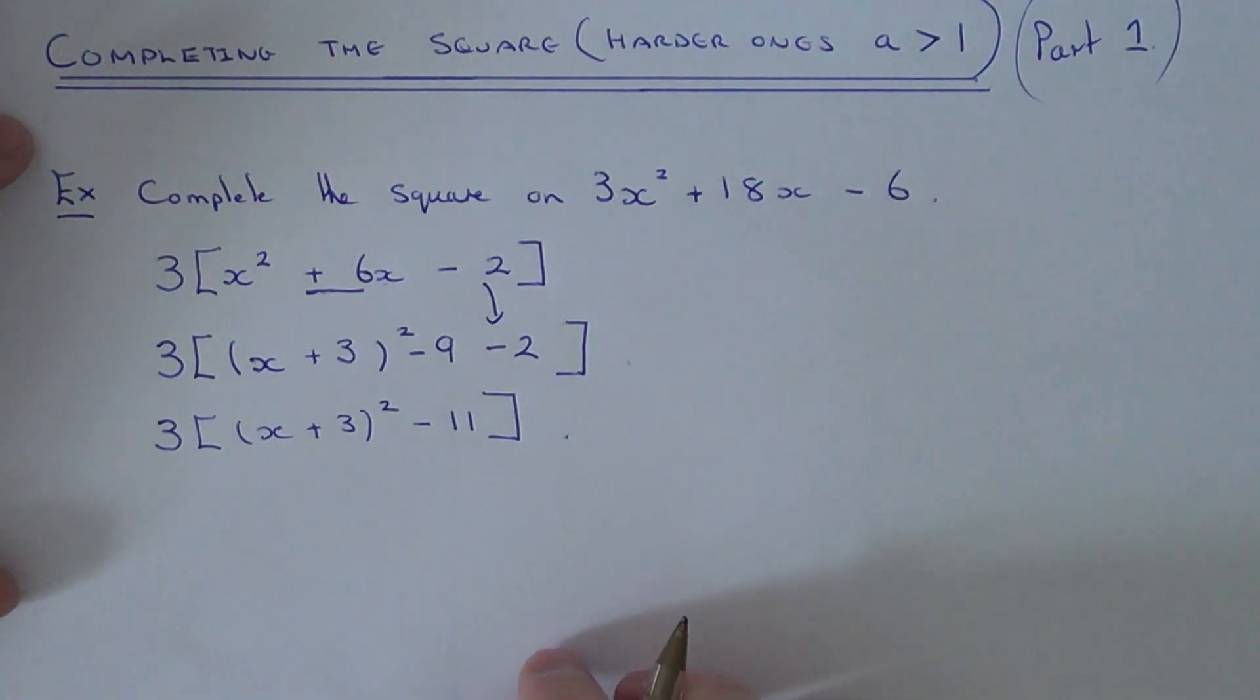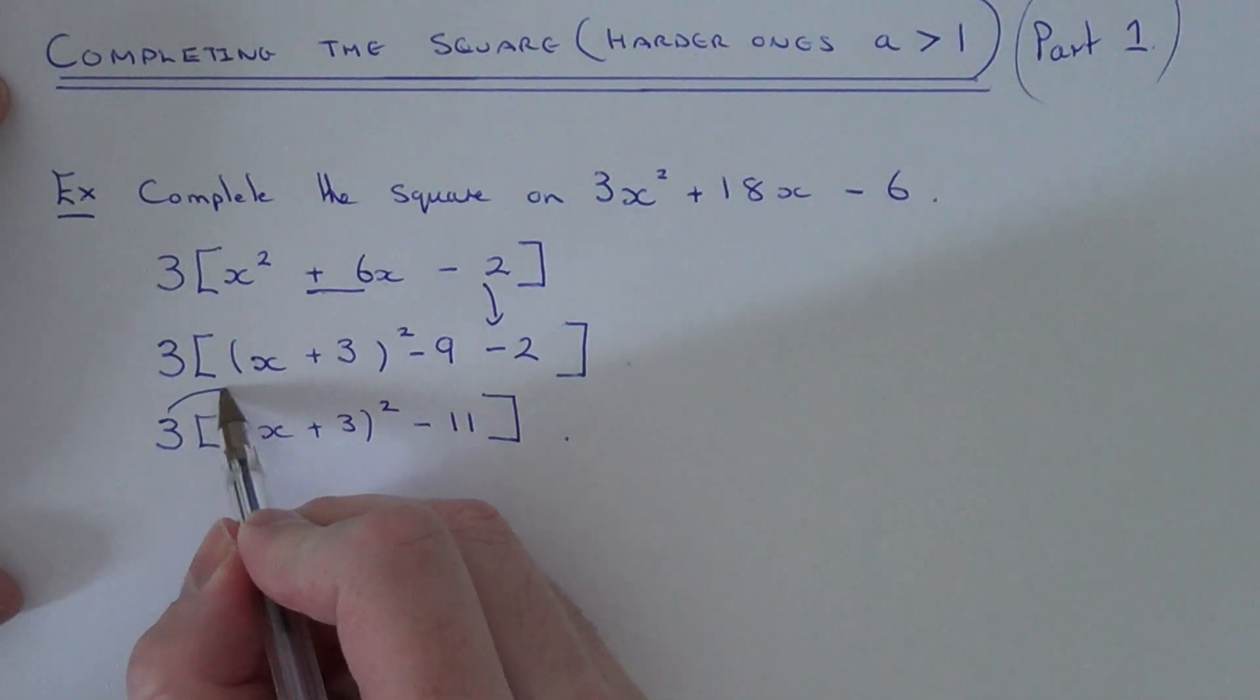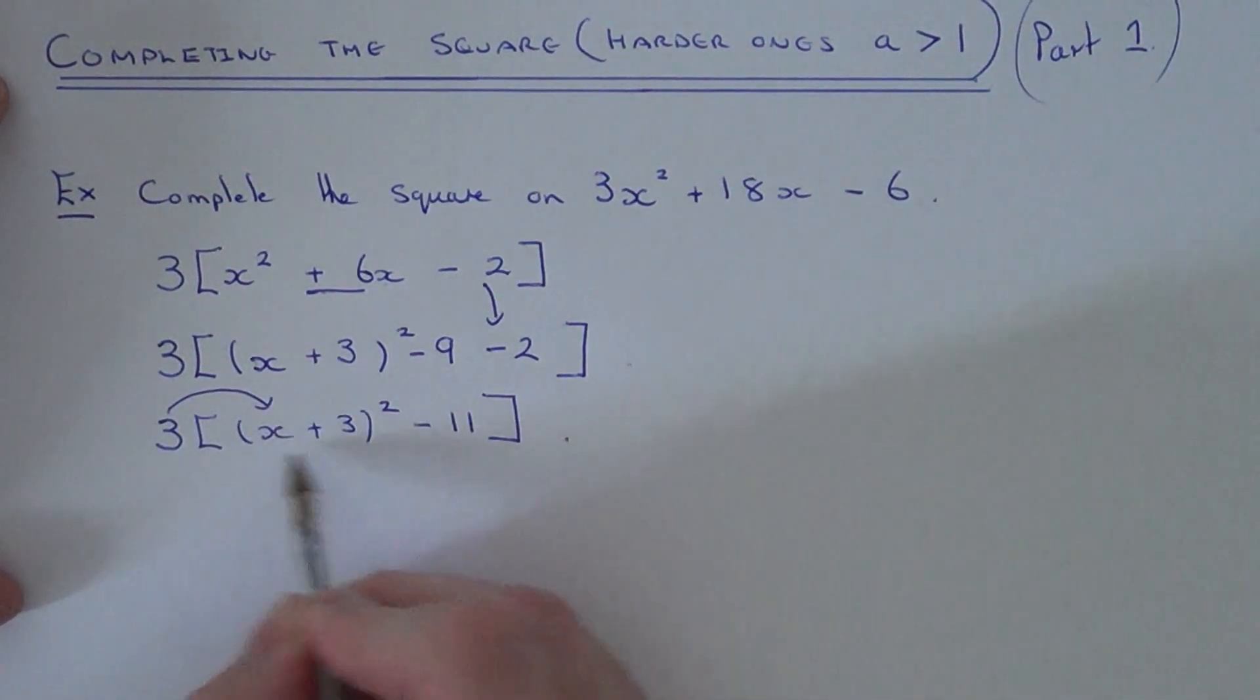So we're nearly there now. Now we just need to remove the big square bracket. To do this we just need to multiply the 3 by this bracket here. So basically you just put the 3 in front of the bracket.